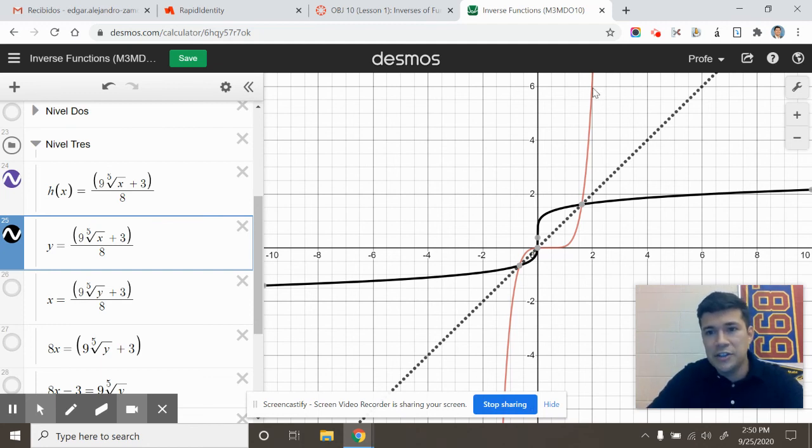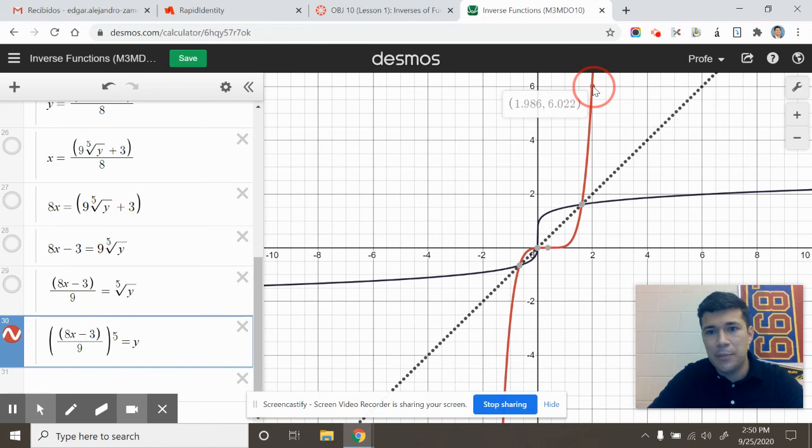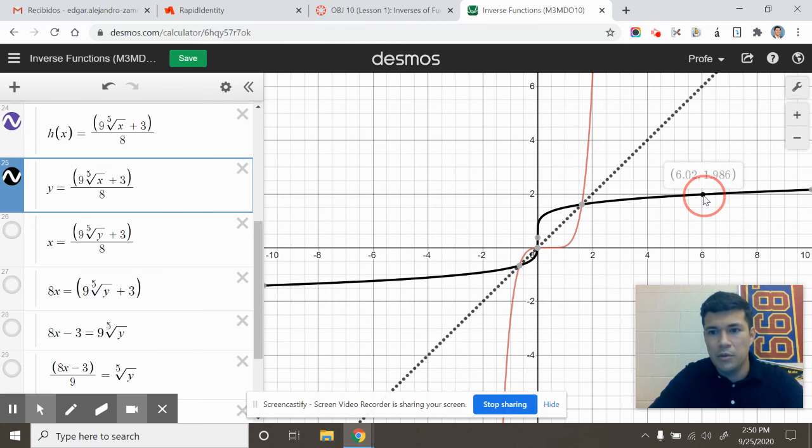You can also test just to make sure with some coordinates. For example, here I see the coordinate looks like 2, 6, or pretty close to 2, 6. So I would expect this other function to have the point 6, 2, which looks pretty good. That is a little more work on finding inverse functions. Best of luck to you.